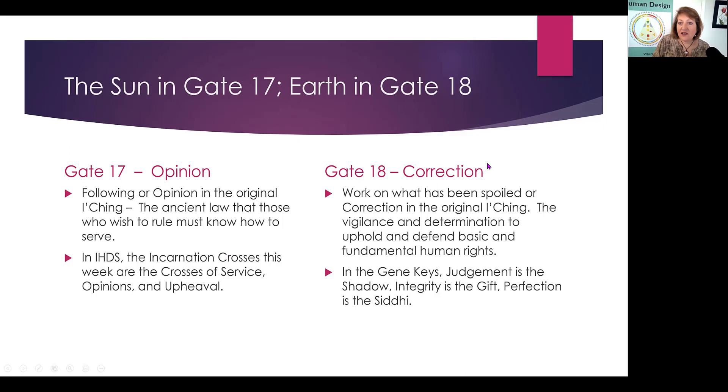And then in Gate 18, it's called the Gate of Correction, or Work on What Has Been Spoiled. In other words, it's things that need fixing, right? Things that need to be corrected or changed or improved. That's what this correction is about. And so they say it's the vigilance and determination to uphold and defend basic and fundamental human rights.